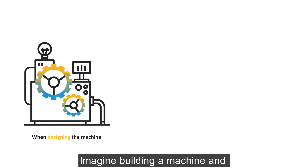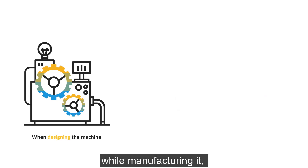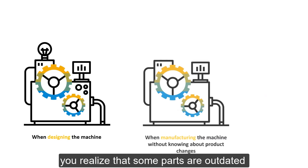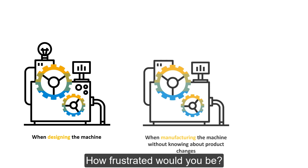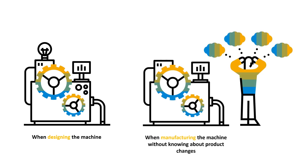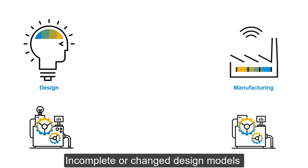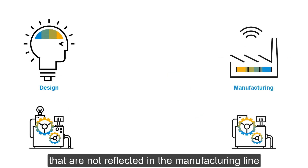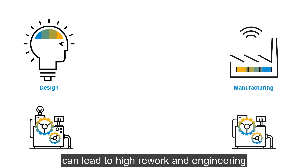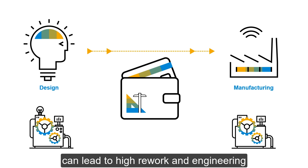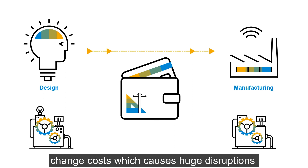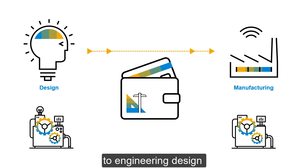Imagine building a machine and while manufacturing it you realize that some parts are outdated and not meant to be a part of this machine. Incomplete or changed design models that are not reflected in the manufacturing line can lead to high rework and engineering change costs, which causes huge disruptions to engineering design and production operations.